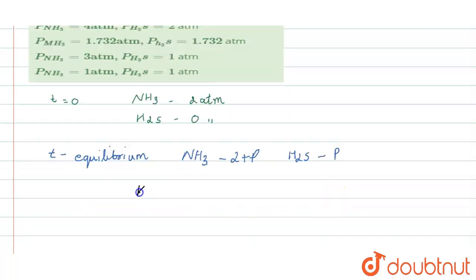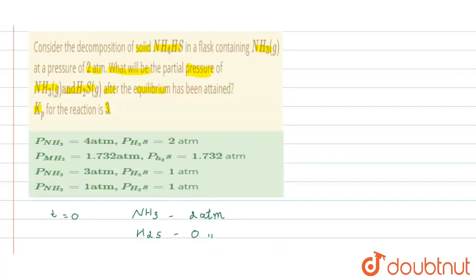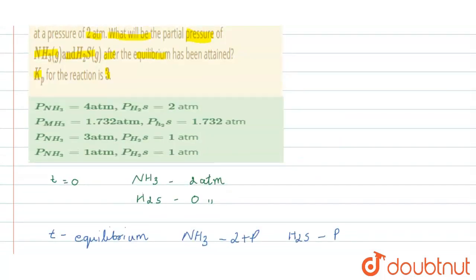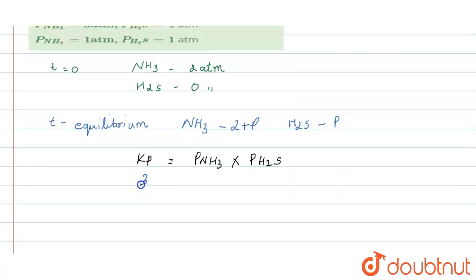Zero plus P is P. To calculate, the formula is pressure of NH3 times pressure of H2S. Kp is given as 3 atm, so 3 equals pressure of NH3, which is 2 plus P, times P.